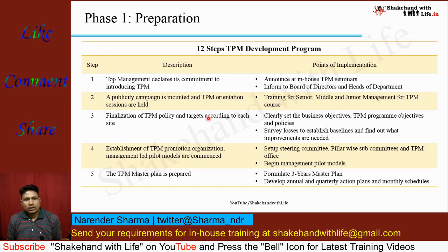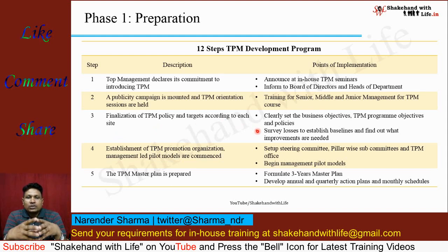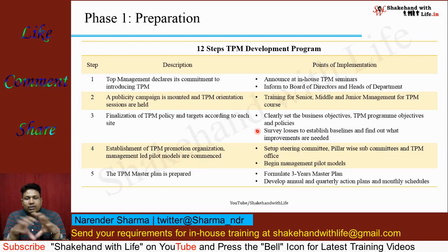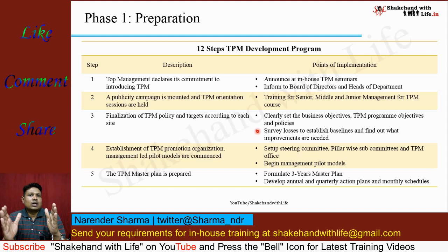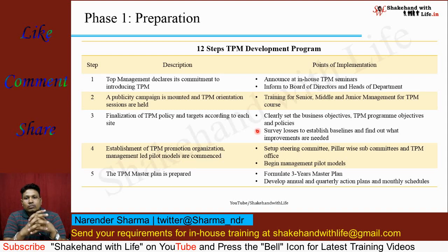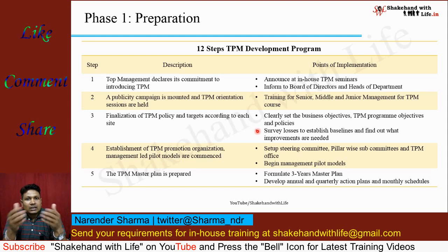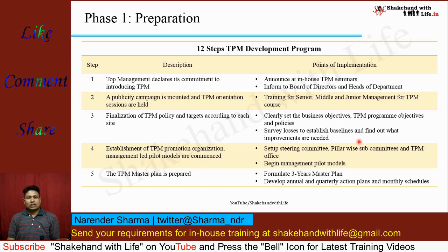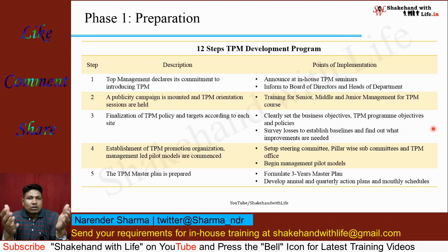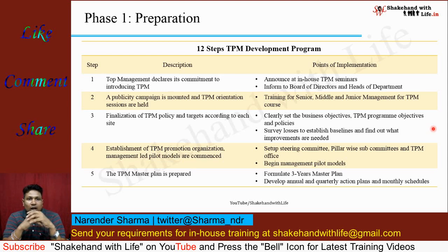The third step is about the TPM policy and targets according to each factory or site. Clearly set the business objectives — what you want from the implementation of TPM, what the objectives of your TPM program are, and what the policy of TPM implementation is. Also survey the losses in the factory, establish a baseline, and find out what kinds of improvements are needed to reduce losses and improve productivity.